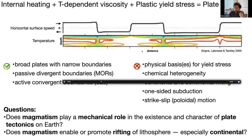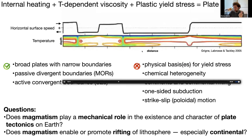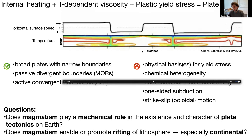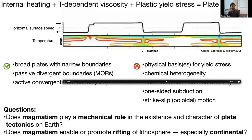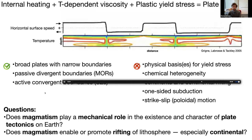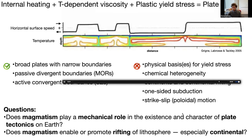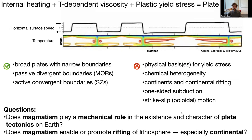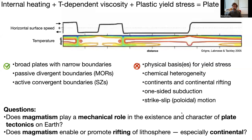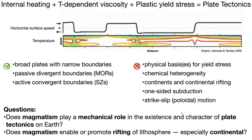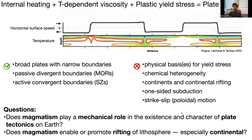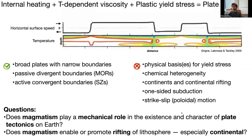What is it lacking or getting wrong? The yield stress is simply a phenomenological limit which is imposed — we say that if the stress at a point builds above this limit there's material failure and it yields at low stress, but we haven't said what the physical basis for that is. It doesn't include chemical heterogeneity, and it doesn't include continents and continental rifting. There's no one-sided subduction, and we don't have any strike-slip or poloidal motion because it's a 2D model.